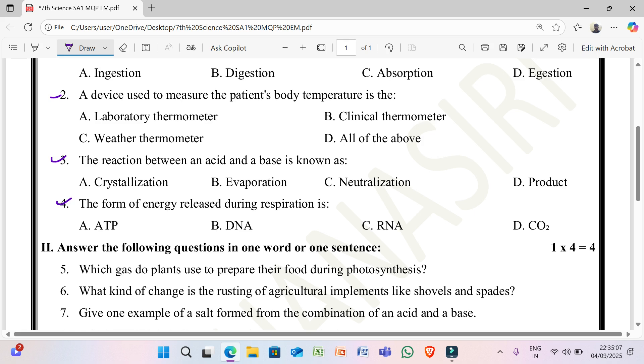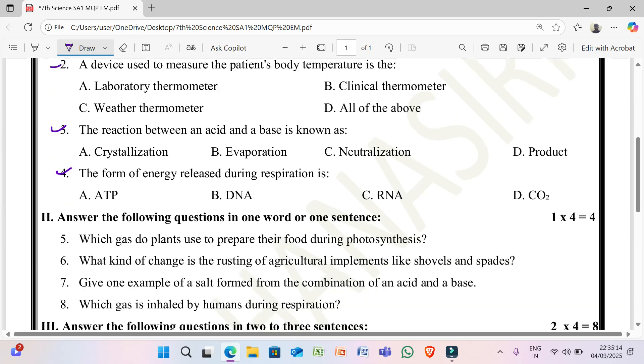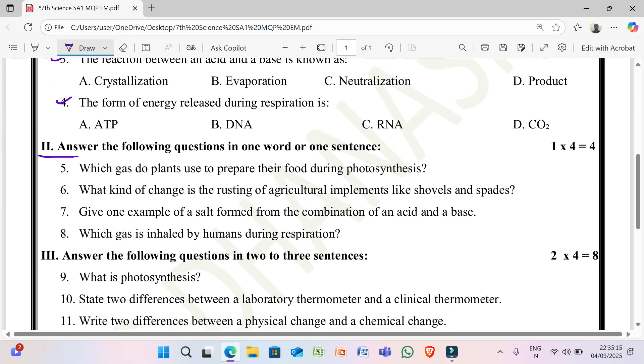the form of energy released during respiration is: A option ATP, B is DNA, C is RNA, D is CO2. 2nd question, answer the following question in word or a sentence, each question 1 mark, total 4 marks, 4 questions.